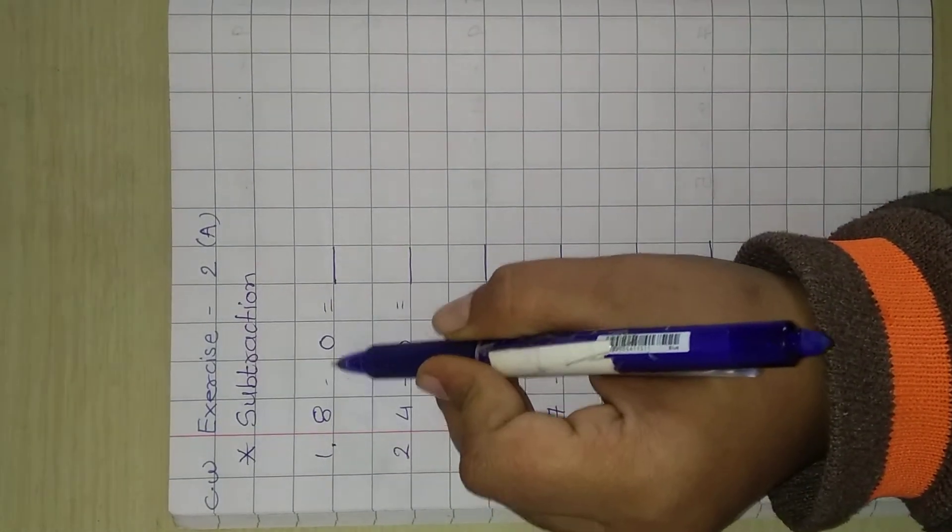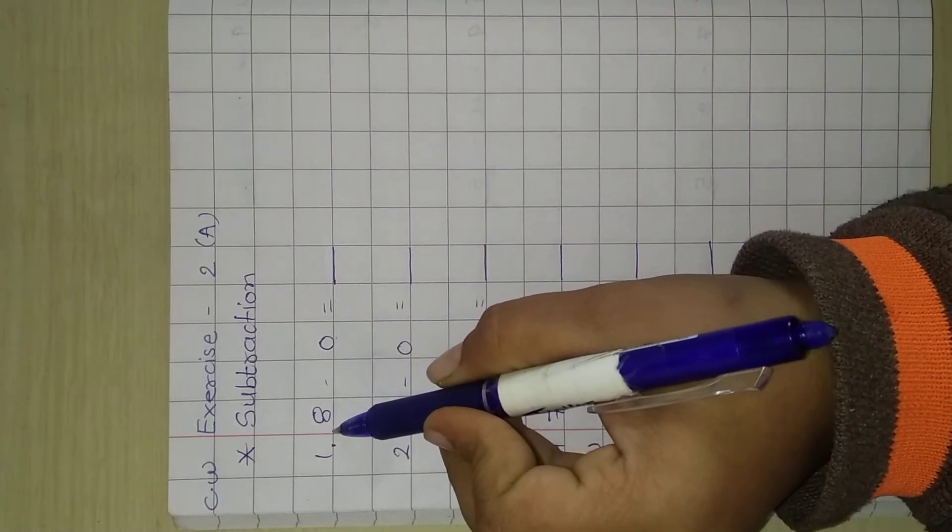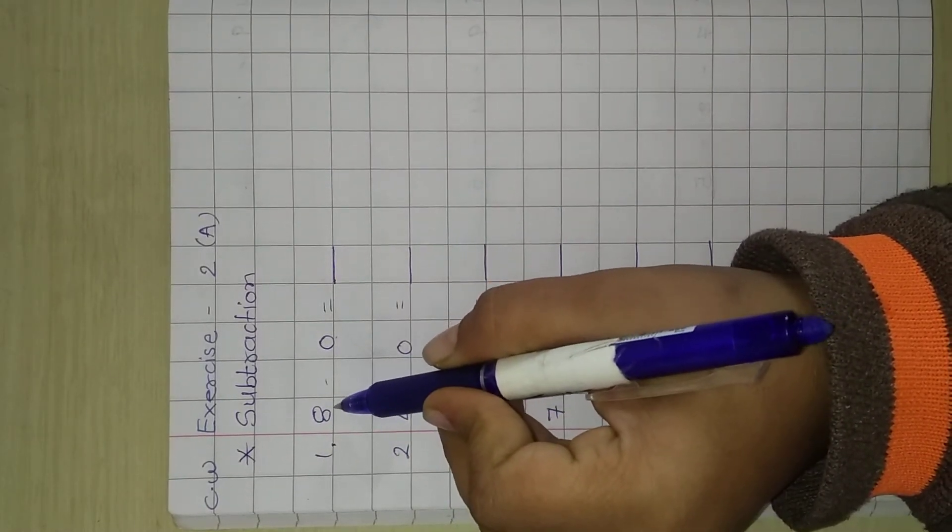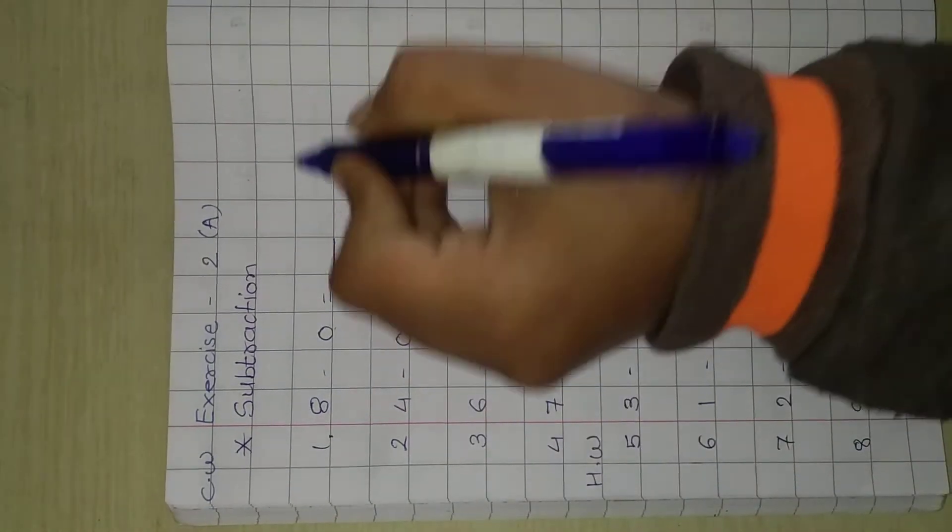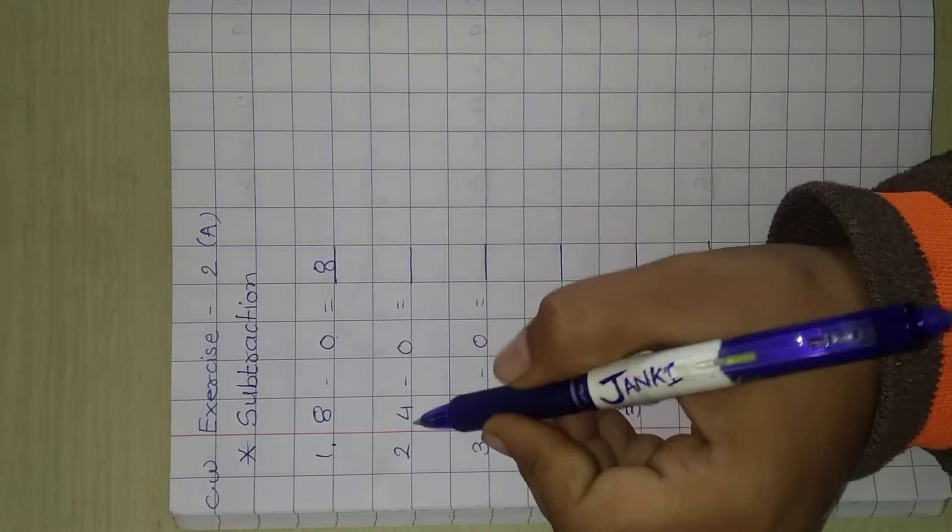Now here is 8 minus 0. In subtraction, any number minus 0, the answer is the number itself. So here 8 minus 0, our answer is 8.